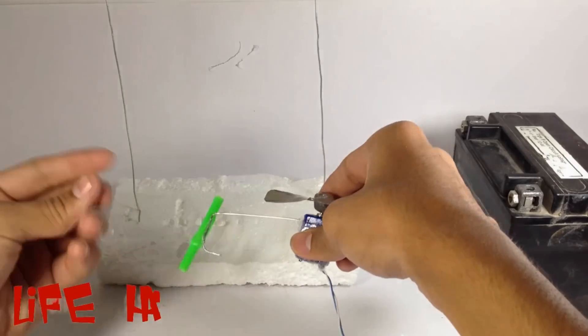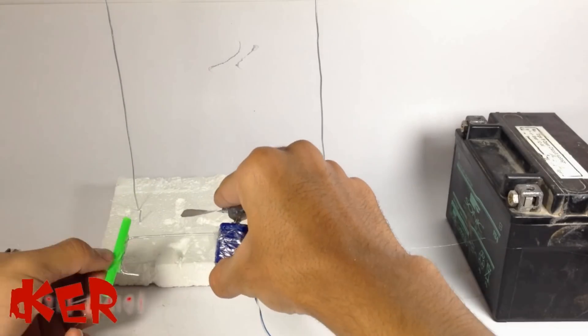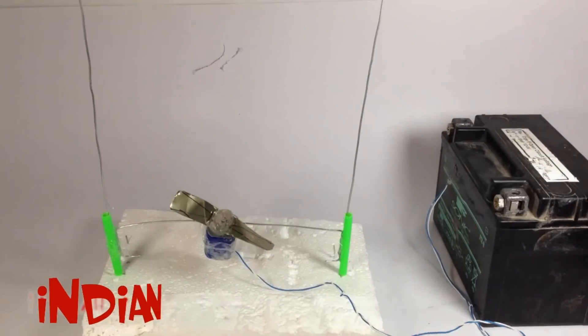So now our helicopter is almost ready and now we just need to give it power. So I am using a 12-volt and 6-ampere battery.